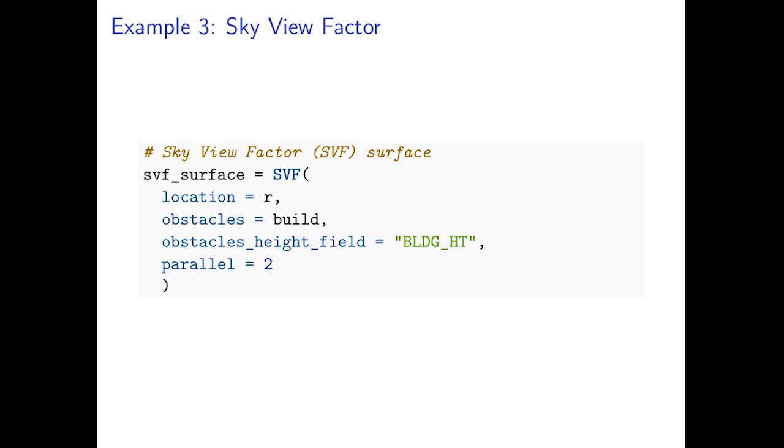Similarly to the shadow height, instead of calculating sky view factor for individual points we can also create a continuous sky view factor surface. To do that we need to replace the location argument with a raster template. We are using the same one from the previous example and we are also using a parallel processing option.